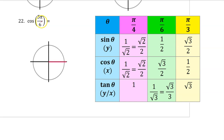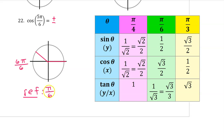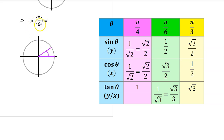To find the quadrant in which 5 pi over 6 falls, let's think of pi as 6 pi over 6. Therefore, 5 pi over 6 will be pi over 6 less than 6 pi over 6. Since the reference angle is pi over 6, the cosine of 5 pi over 6 will be plus or minus the cosine of pi over 6, which is radical 3 over 2. Since cosine is the x-coordinate and x-coordinates are negative in the second quadrant, the answer is negative radical 3 over 2. The sine of pi over 6 is one of our memorized values — it is 1 half.